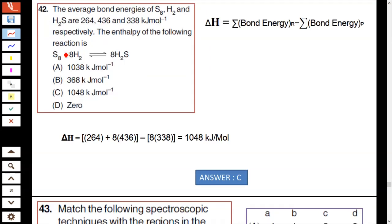Question number 42: The average bond energies of S8, H2, and H2S are given. Three values have been given respectively. The enthalpy of the following reaction: Take this from the equation, the bond energy of the reactants S8 plus 8H2 minus bond energy of the product.